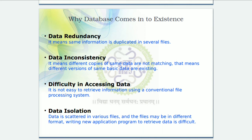Now let's discuss why databases came into existence — the drawbacks of the file system. Before databases, the file system was used to store data. The very first drawback is data redundancy, meaning the same information is duplicated in several files. For example, if I want to maintain student information — roll number, name, branch, email ID — stored in a simple word file, the same data may be repeated across multiple files.